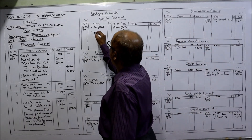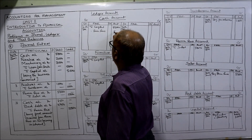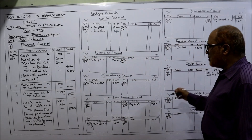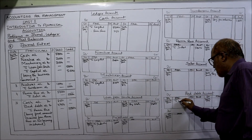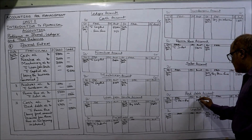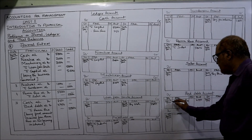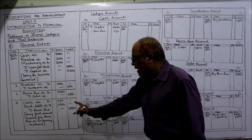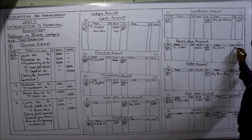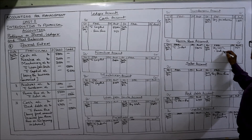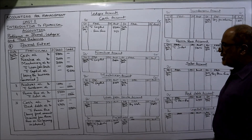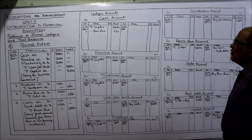For January 31st: cash account debit to Rama Rao 250. Bad debts account debit side to Rama Rao 4750, dated 31st. Bad debts account is now debited. Rama Rao's account is credited — by cash 250 and by bad debts 4750 — totalling 5000. All entries are now posted.